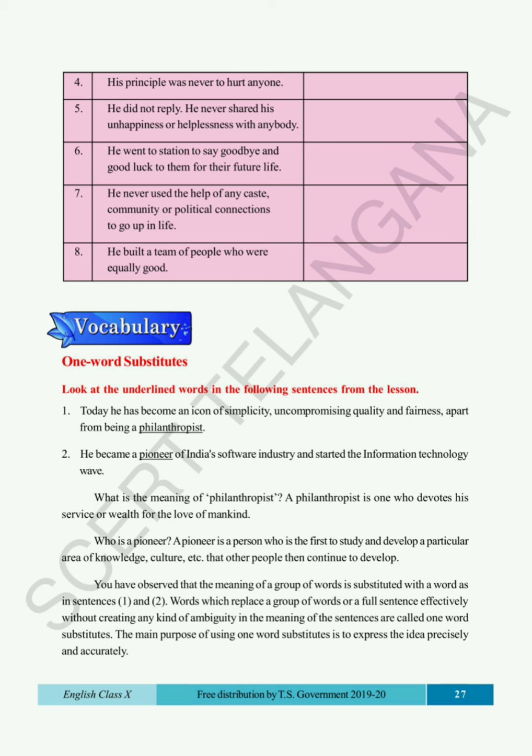The first one is: 'Today he has become an icon of simplicity, uncompromising quality and fairness apart from being a philanthropist.' Now moving to the second sentence: 'He became a pioneer of India's software industry and started the information technology wave.' So here in these two sentences, the word 'philanthropist' in the first sentence and 'pioneer' in the second sentence are underlined.